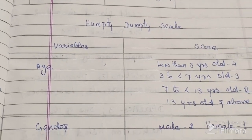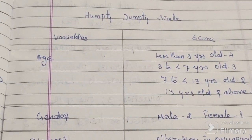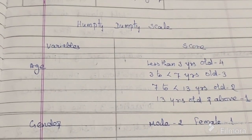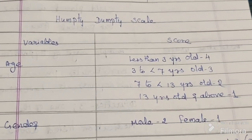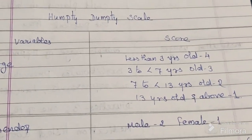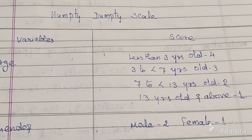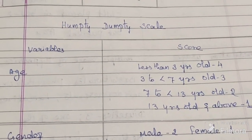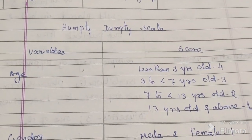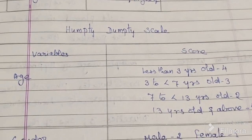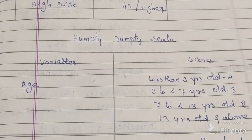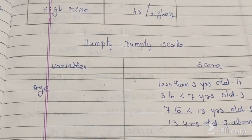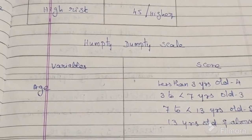The six variables are: age, gender, diagnosis, cognitive impairment, environmental factor, and medication usage. For age: if the child is less than 3 years old, give a score of 4; if between 3 and less than 7, give a score of 3; if between 7 and less than 13, give a score of 2.